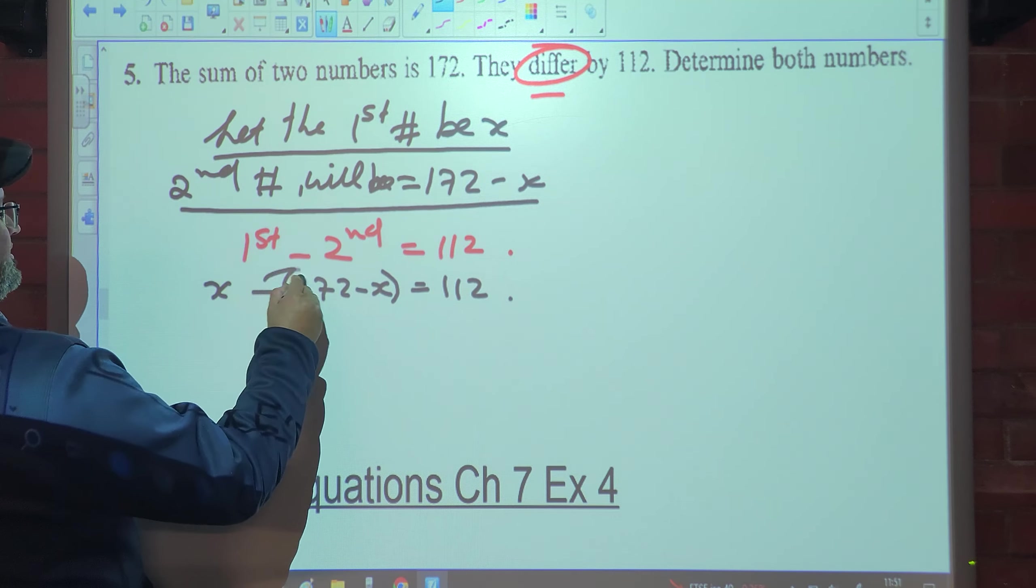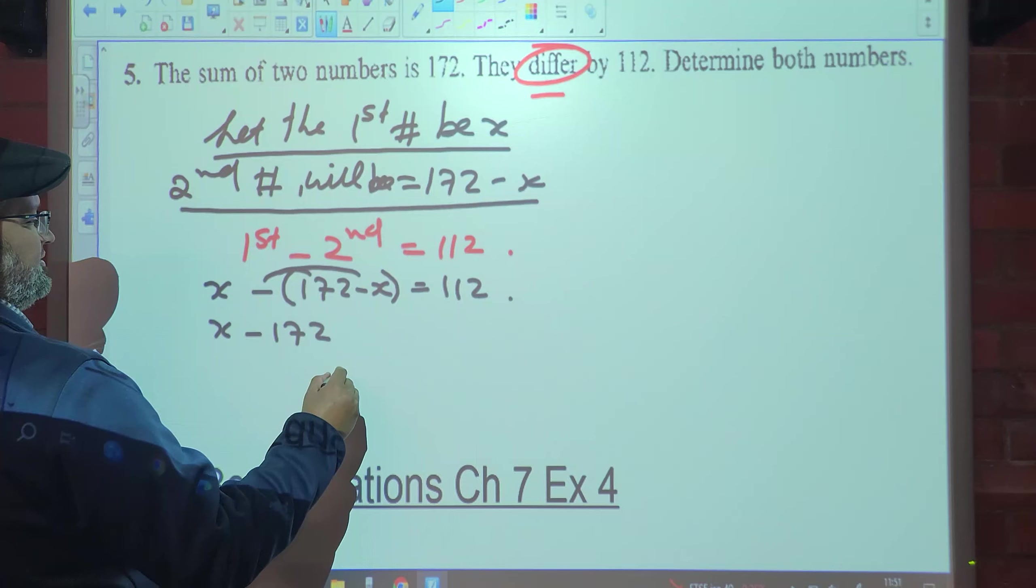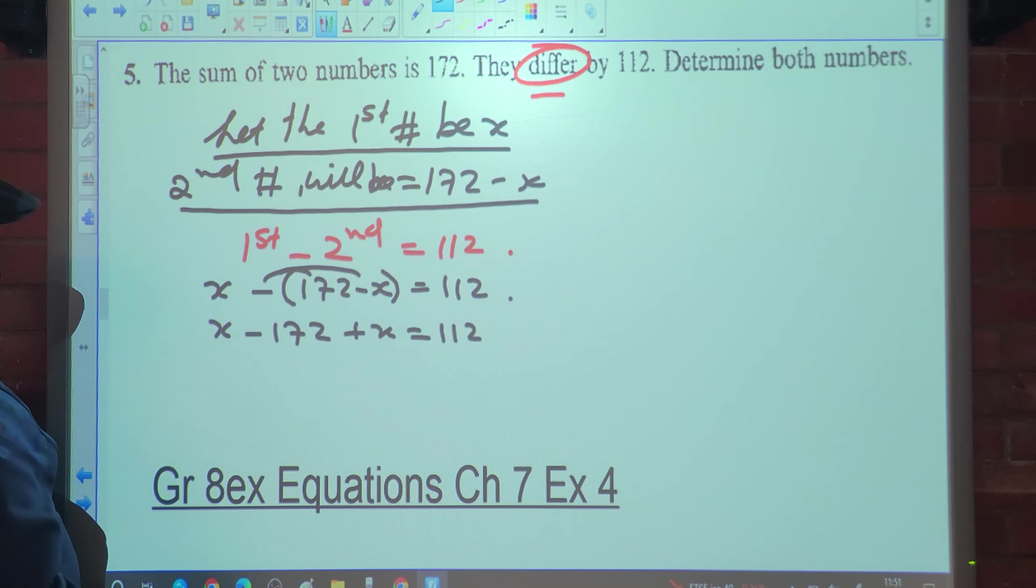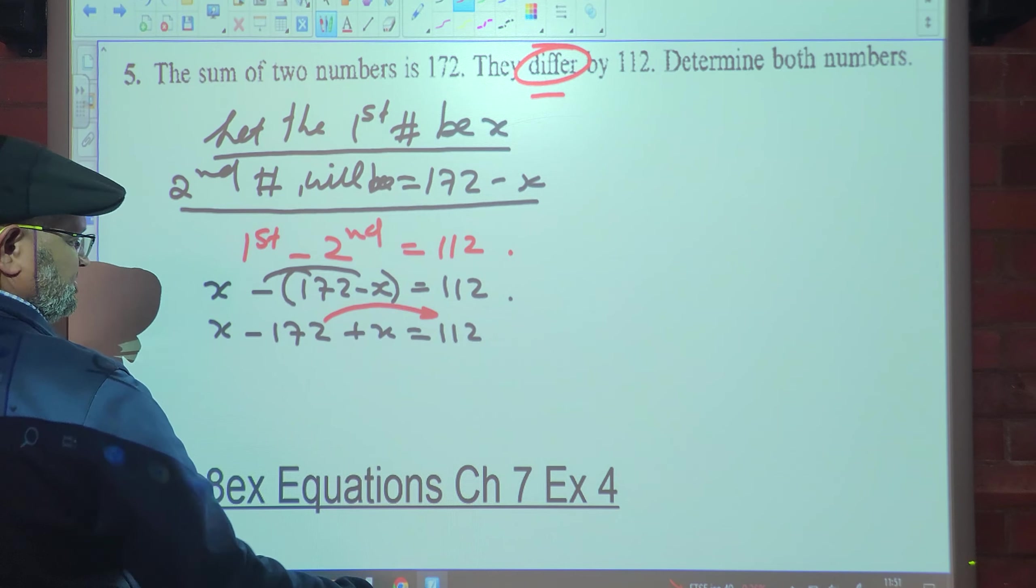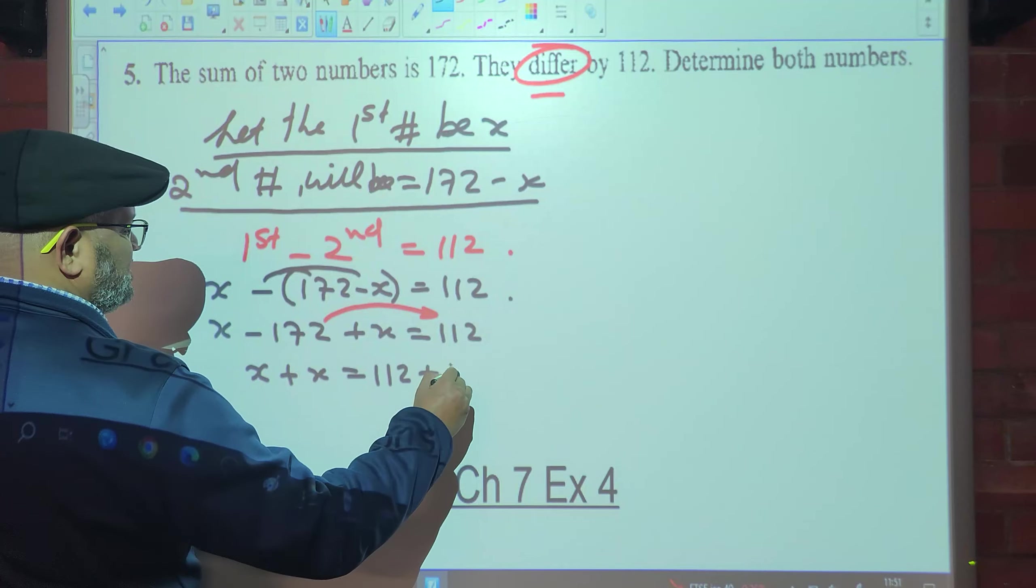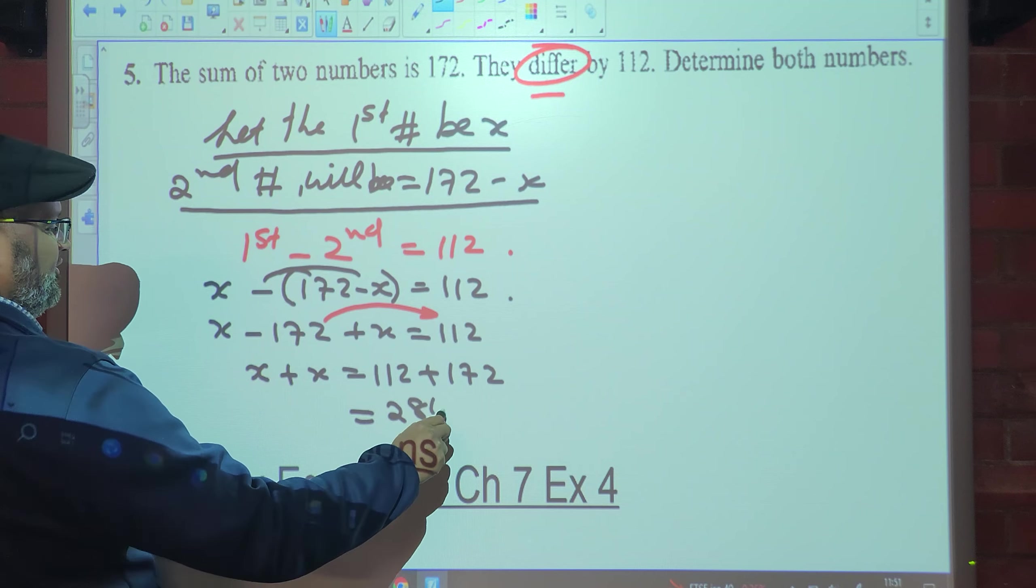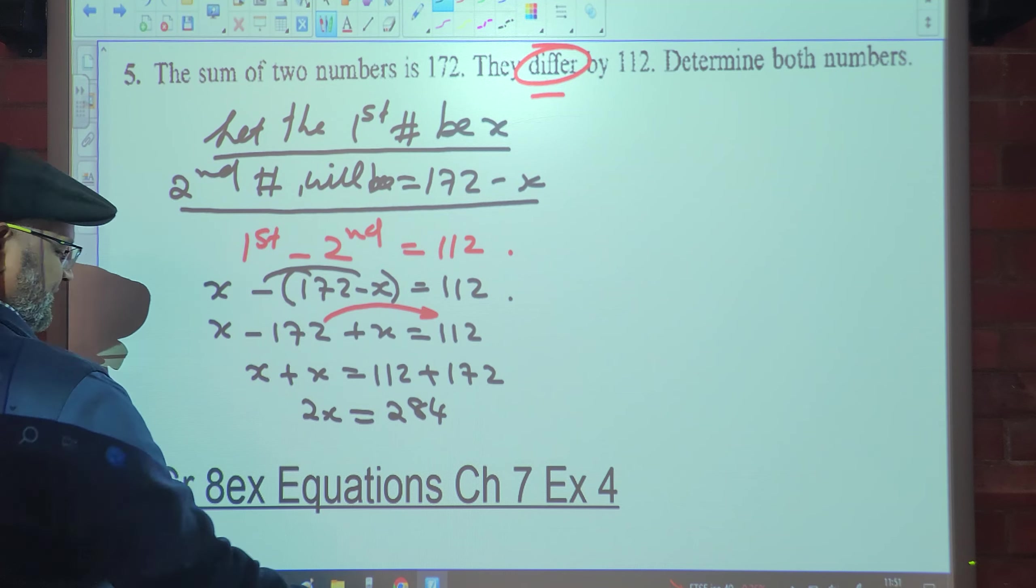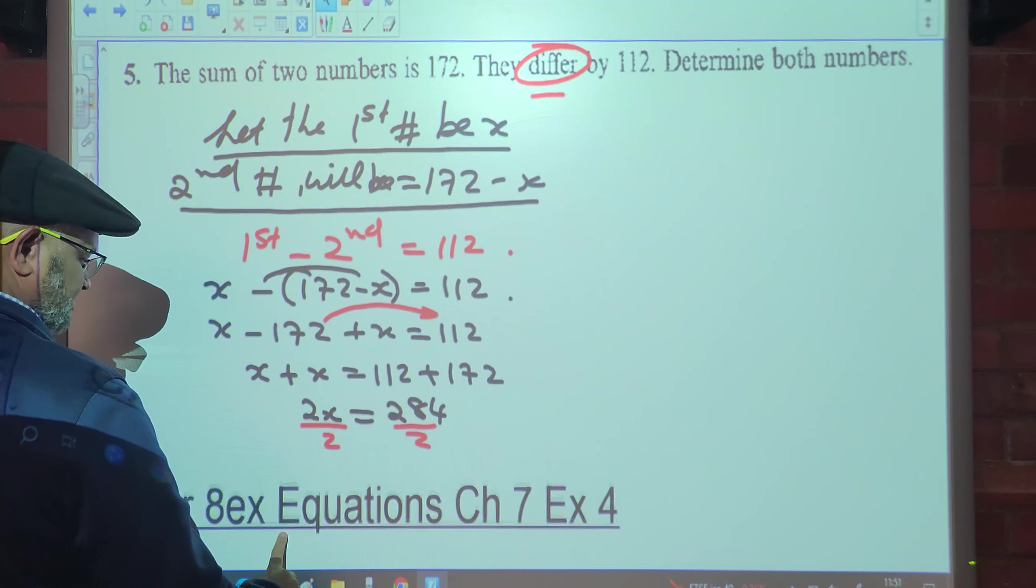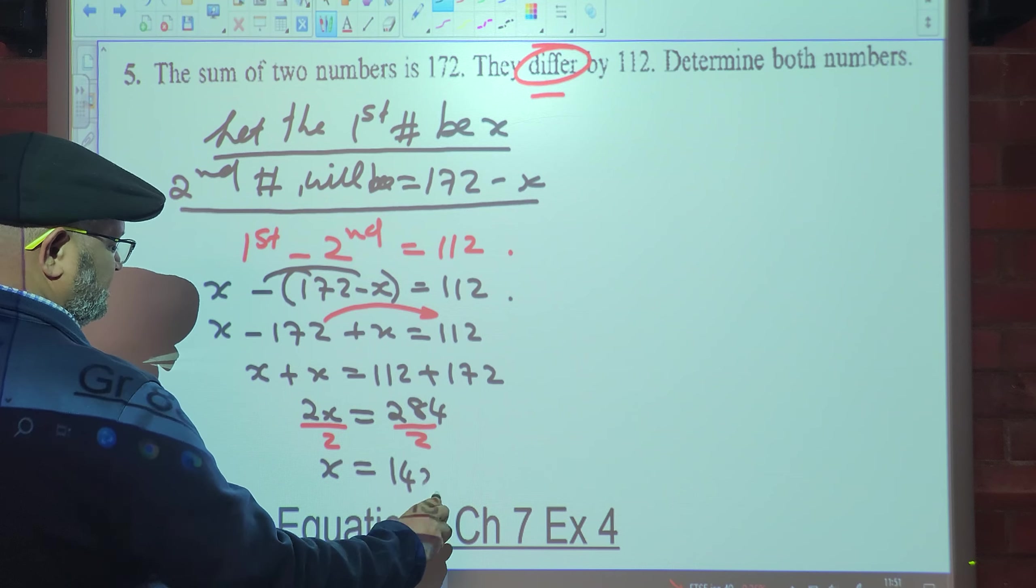So what do we get? Multiply that in, I get x minus 172 plus x is equal to 112. I take that over the equal sign. x plus x is equal to 112 plus 172. So that's going to give us 284 is equal to 2x. Divide by 2 both sides, so x is equal to 142.